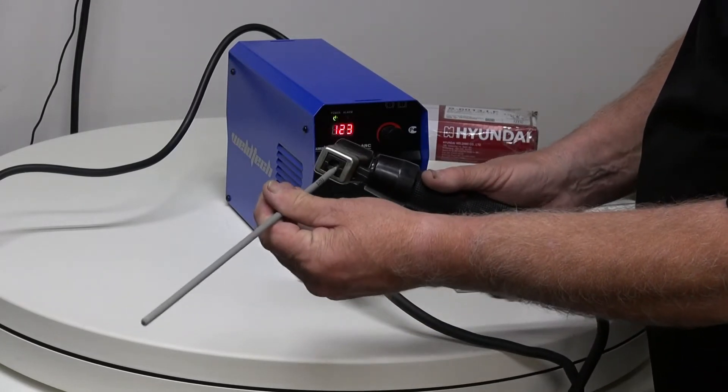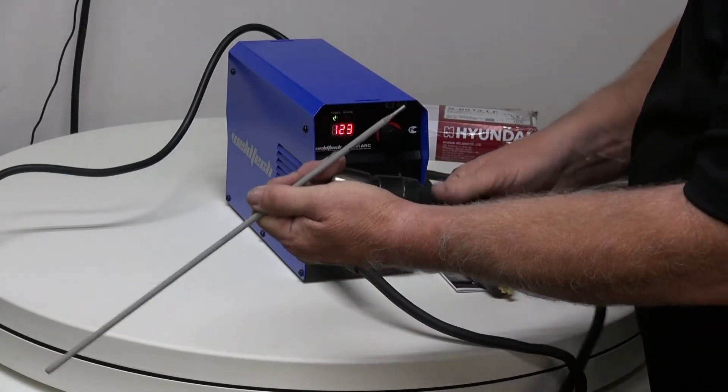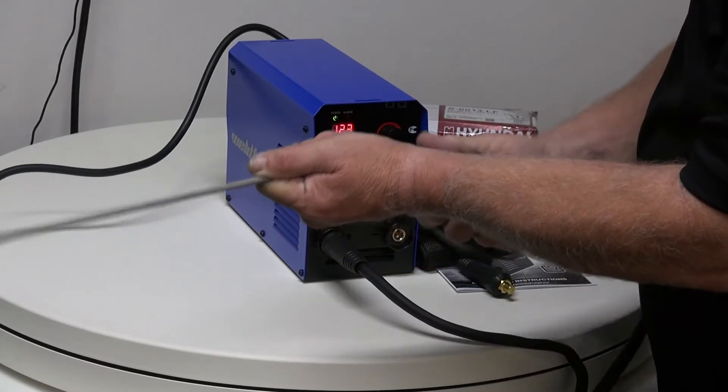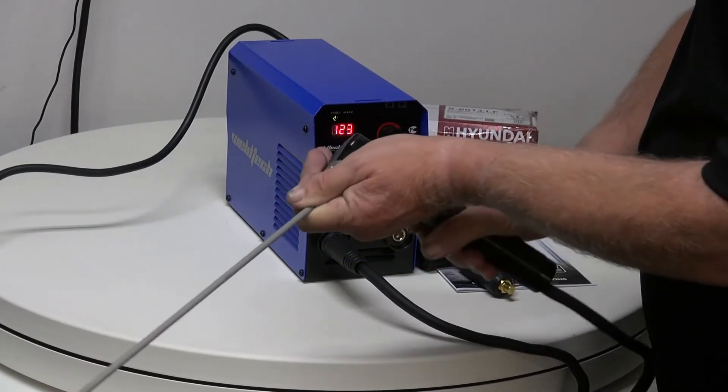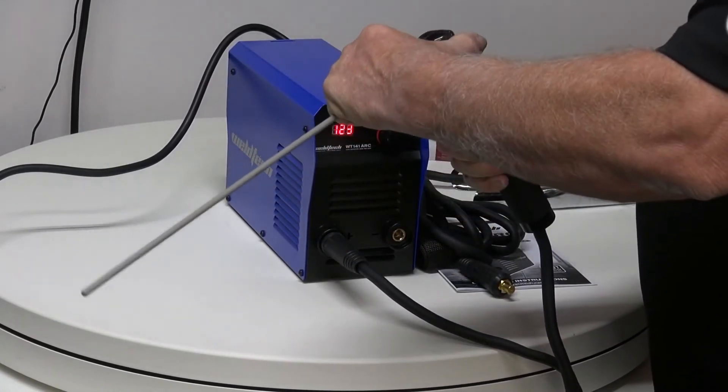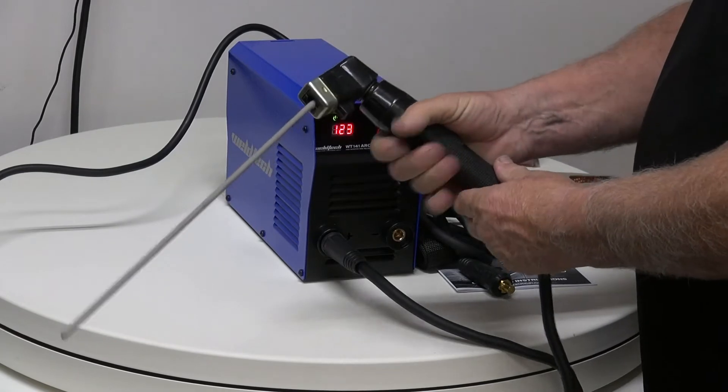We then put our electrode in, which is a 3.2mm, into the jaws there. And then we tighten it up. Make sure it's really tight because it's got to get a good contact. And then we're ready to set the electrode up.